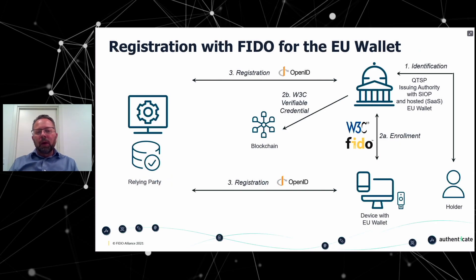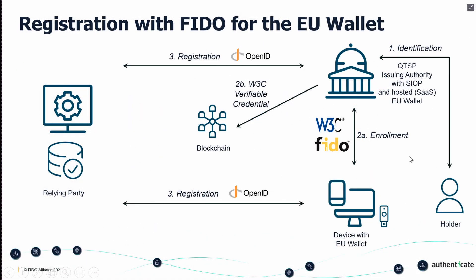Here's an overview of how to register with FIDO for the EU wallet using SIOP, W3C, and FIDO. The holder identifies themselves to the QTSP. The QTSP can host a wallet — a so-called SaaS wallet — or the wallet can be present on the device. Enrollment can take place centrally at the QTSP or locally on the device. FIDO can be used as part of the enrollment, meaning FIDO is used to download W3C credentials to the local wallet. FIDO can also be used for remote online identification. The verifiable credentials are put on the blockchain, and then OpenID is used to register the QTSP or device with the EU wallet to a relying party.